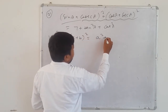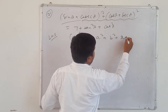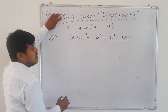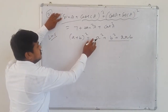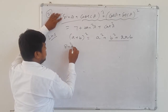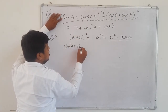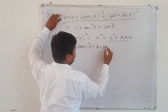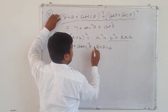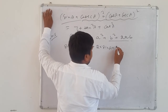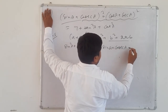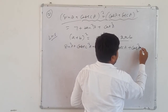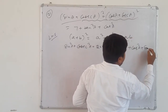Using (a + b)² = a² + b² + 2ab. Open the whole square. First digit squared: sin²a. Then cosec squared: cosec²a. Plus 2 times both multiplied: 2·sin a·cosec a. Then cos squared: cos²a. Then sec squared: sec²a. And 2 times both: 2·cos a·sec a.